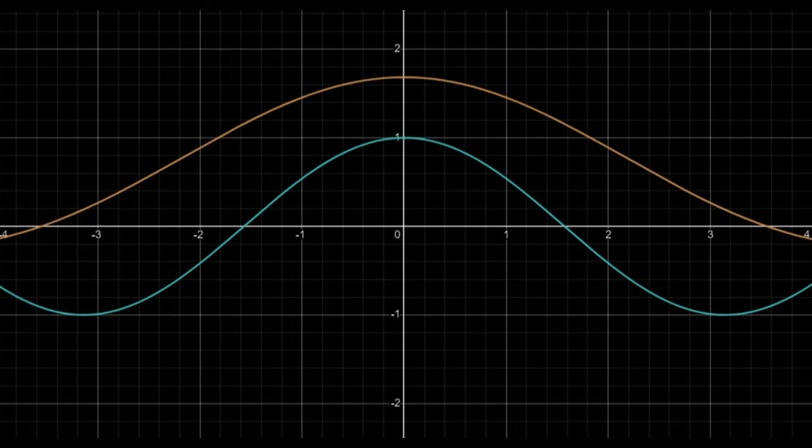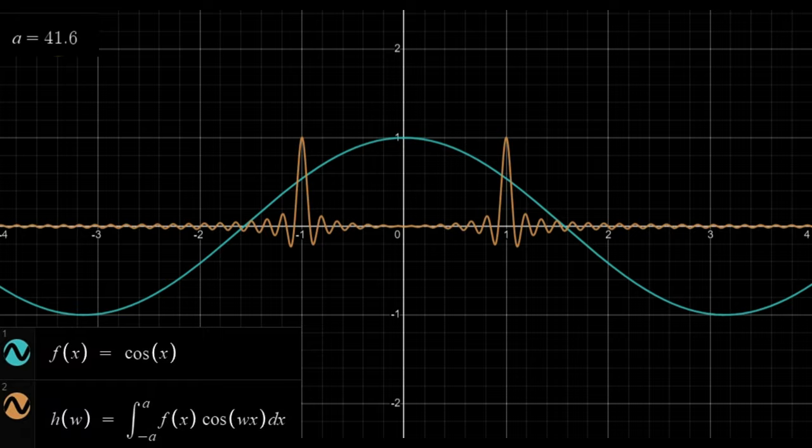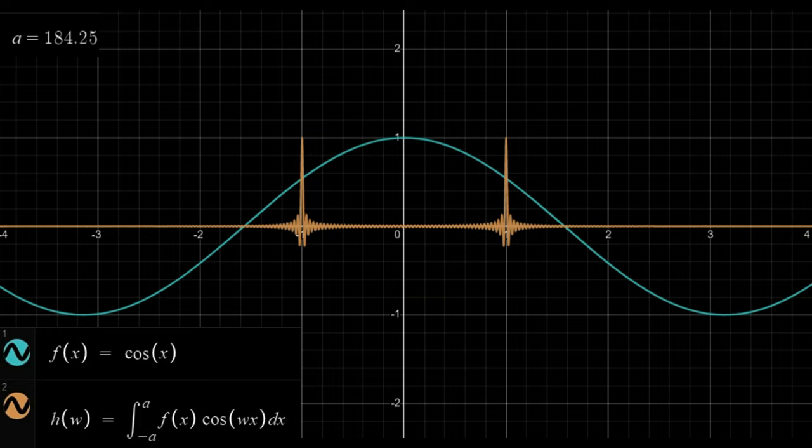As we said, the Fourier transform measures overlaps with sines and cosines. So what happens when we feed it a pure cosine wave? You can see that as we increase our bounds of integration, the transform approaches zero everywhere, except for two spikes at plus and minus 1, where the transform approaches infinity.